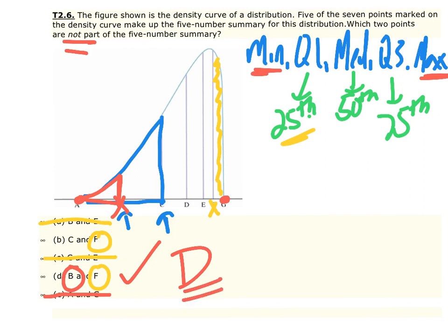To summarize: C is Q1, D is the median, and E is Q3 in this distribution.